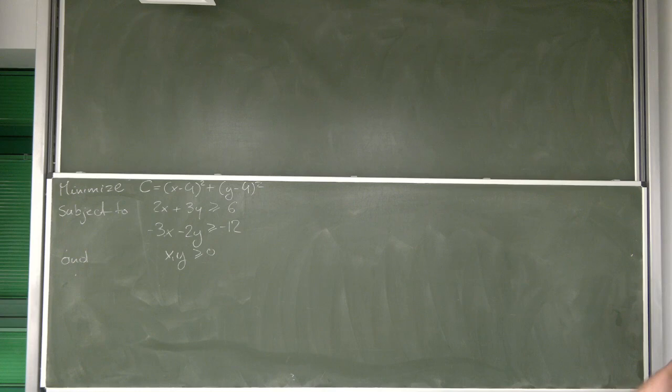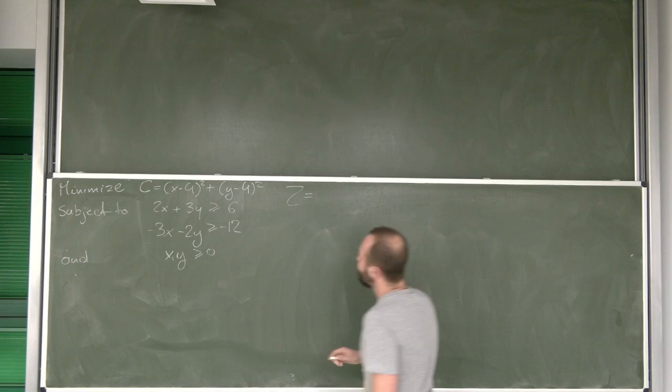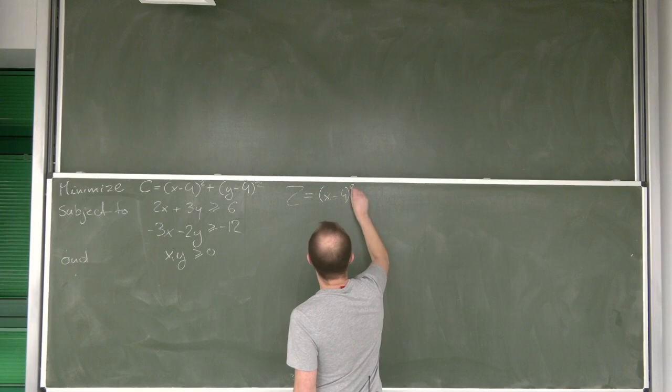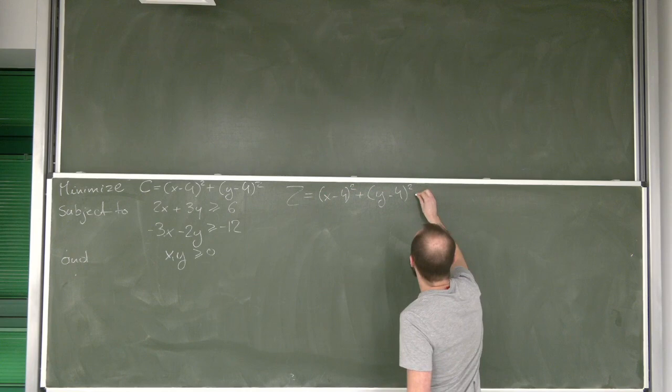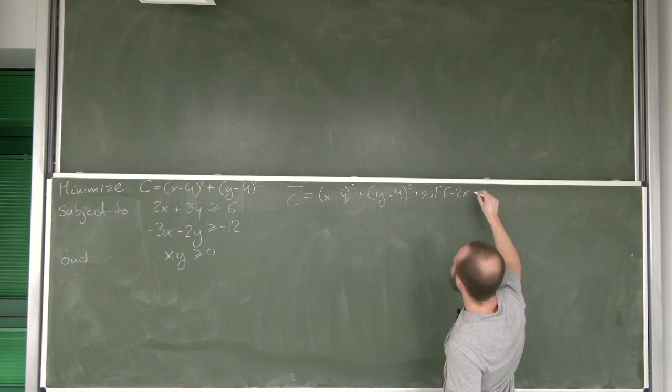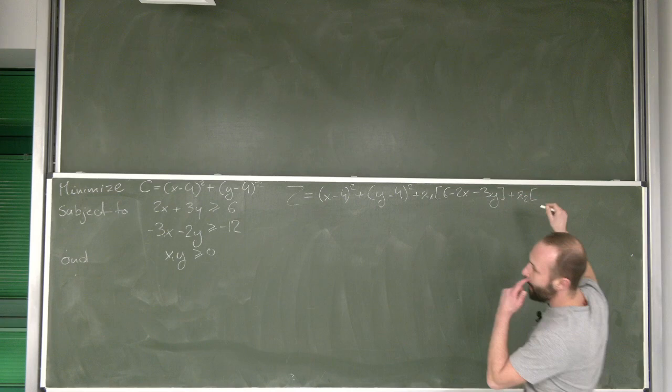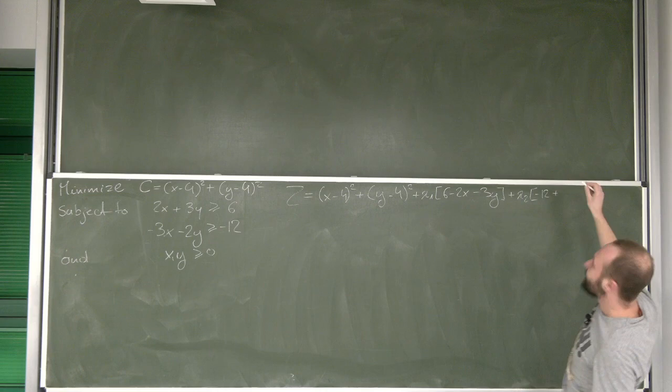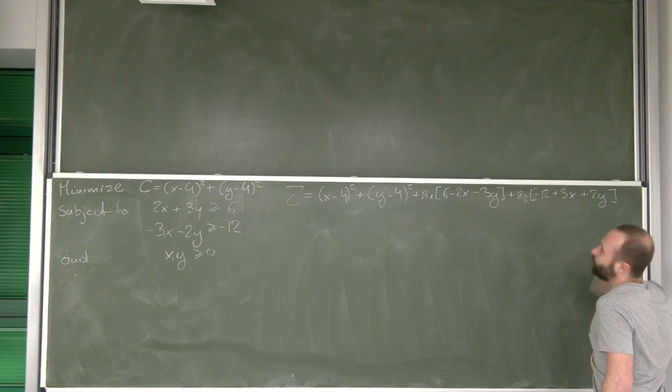And look, we start as usual by making a Lagrangian function and we get that this is (x minus 4) squared plus (y minus 4) squared plus lambda 1 times (6 minus 2x minus 3y) plus lambda 2 times (negative 12 plus 3x plus 2y).